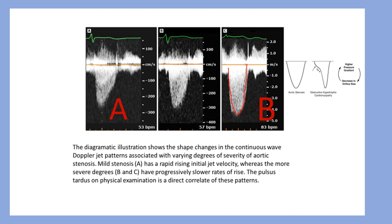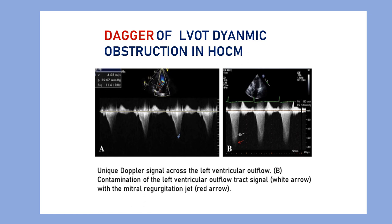After valvular aortic stenosis, the Doppler signal of left ventricular outflow tract obstruction in hypertrophic obstructive cardiomyopathy is quite distinct, with late peaking of the velocity curve. Because of the subvalvular or mid-cavity obstruction, the late peaking results from the Venturi effect, which pulls the anteriorly displaced leaflet of the mitral valve into the outflow tract, resulting in late peaking of the outflow signal in hypertrophic cardiomyopathy.